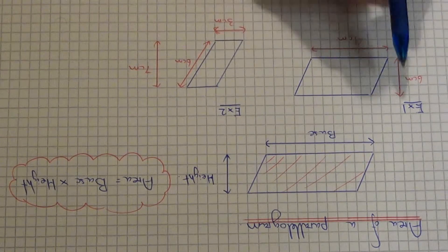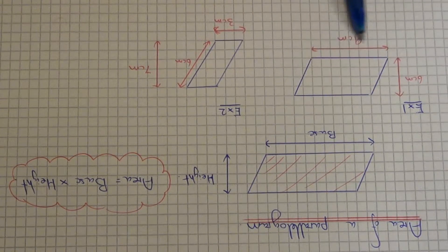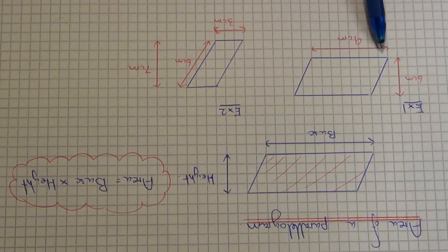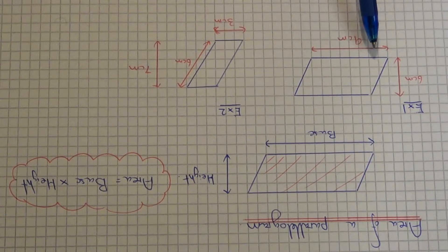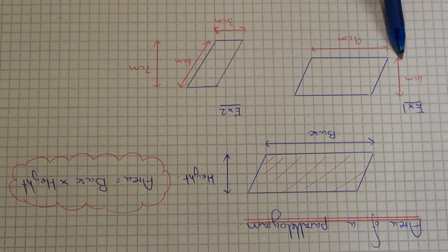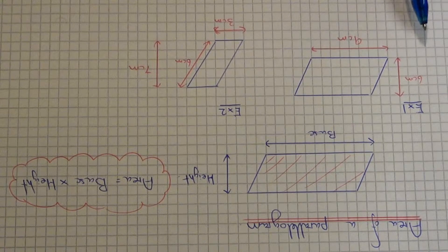So let's have a look at example one. We need to calculate the area of this parallelogram here. The base length is nine centimetres and the vertical height of the parallelogram is six centimetres.